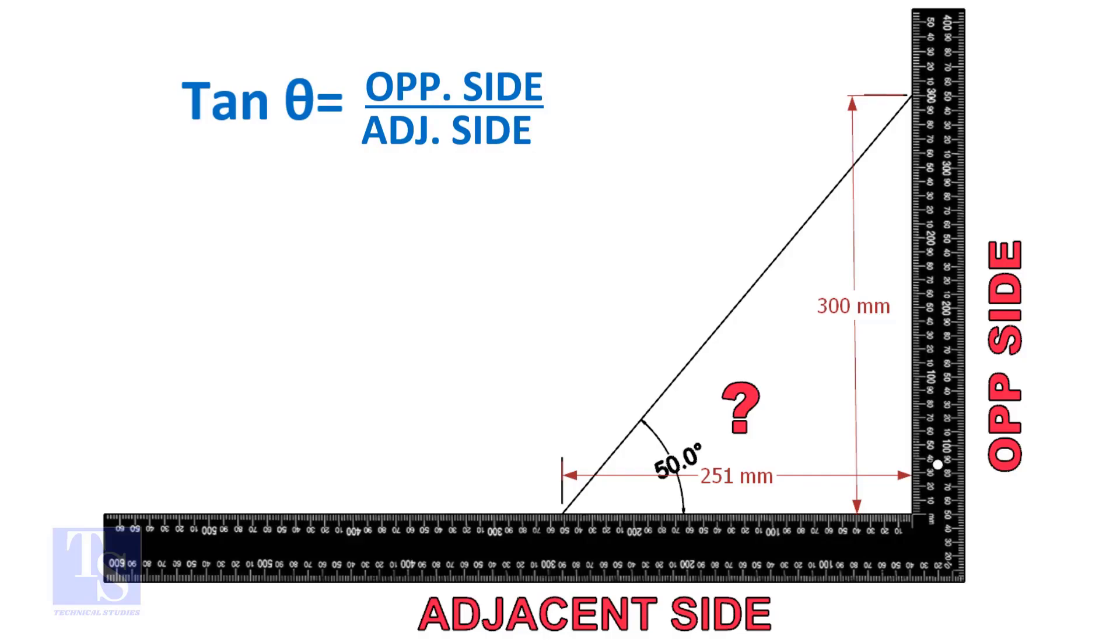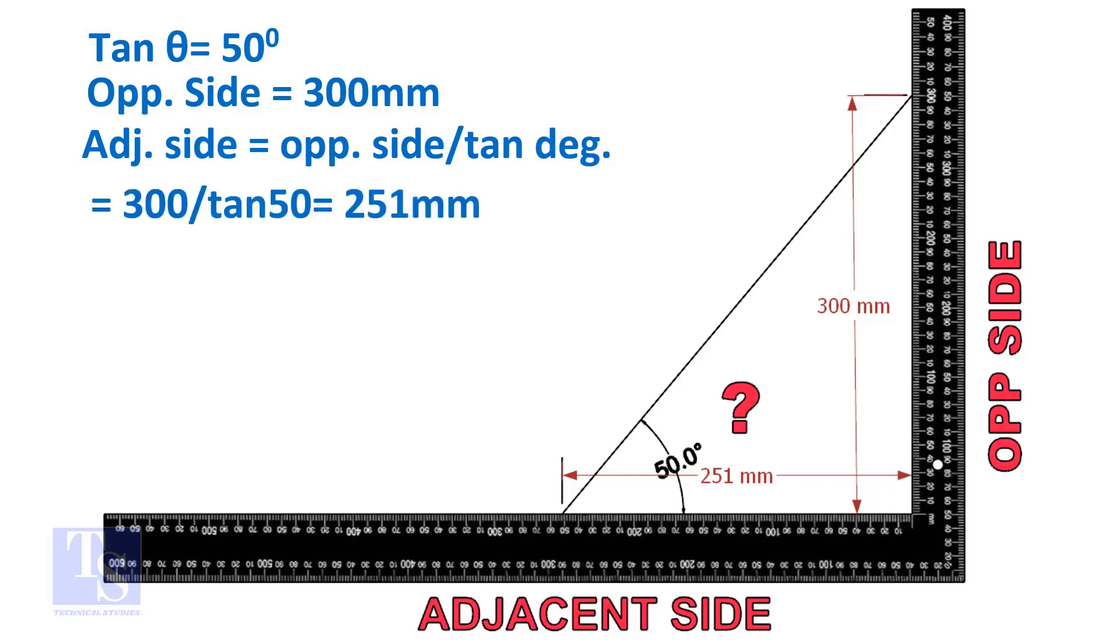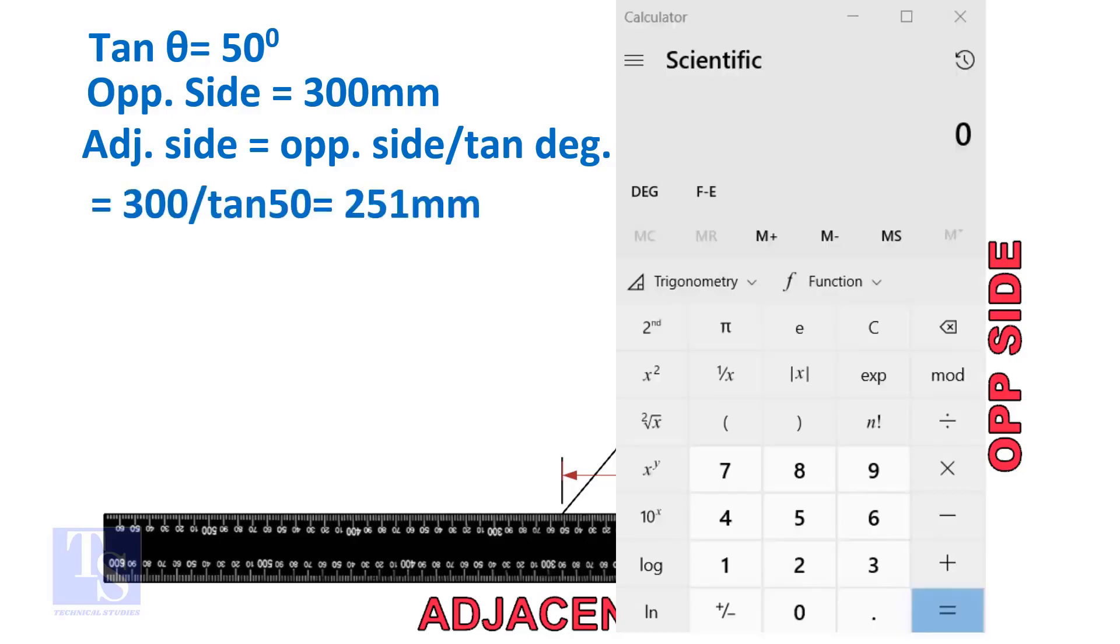Let us assume the opposite side is 300 mm. But you can take any suitable dimension as required. Adjacent side is equal to 300 divided by tan 50 degree. Let us calculate.